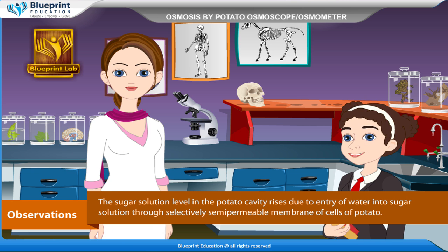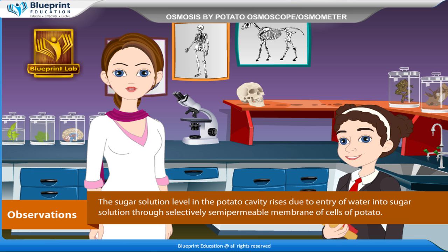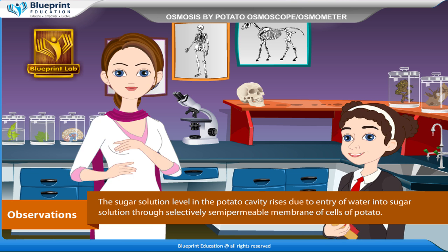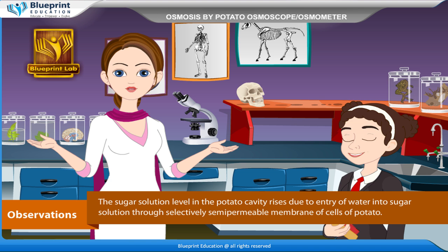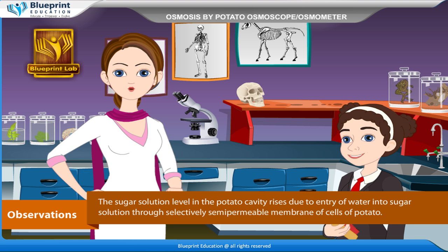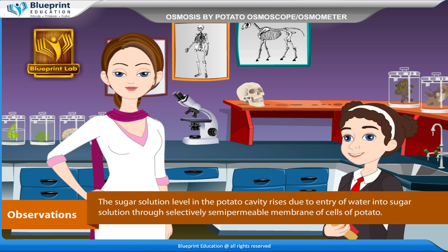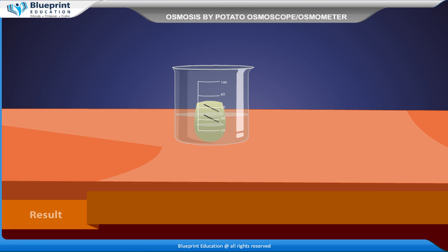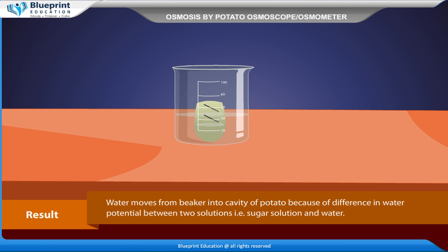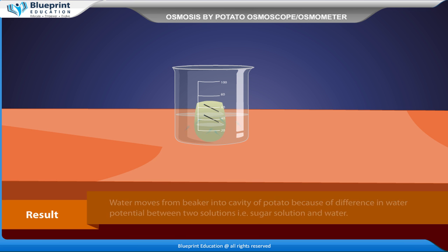Observations: The sugar solution level in the potato cavity rises due to entry of water into sugar solution through the selectively semi-permeable membrane of cells of potato. Result: Water moves from the beaker into the cavity of potato because of a difference in water potential between the two solutions, that is, sugar solution and water.